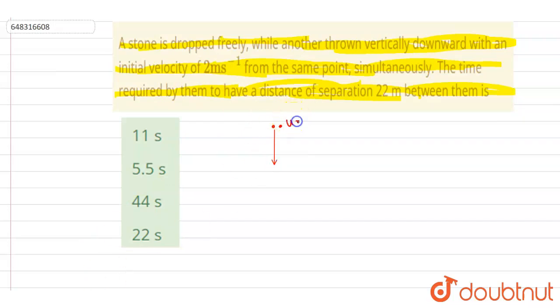This one is having zero velocity. So let's say this is A and this is B, and uA and uB are zero and 2 meters per second respectively. Now let's do this with respect to A. So if I write